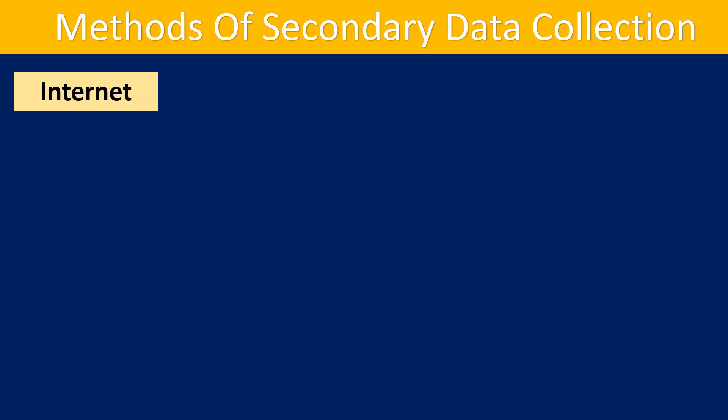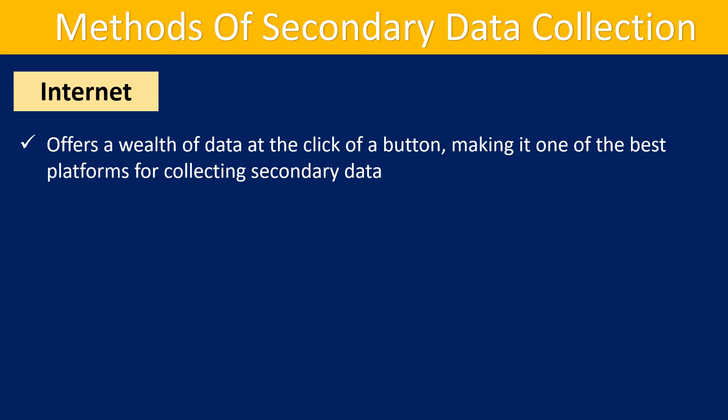The internet is one of the most popular and readily accessible sources of secondary data. It offers a wealth of data at the click of a button, making it one of the best platforms for collecting secondary data. While much of the information is free, some websites may charge fees, although these are typically low. However, it is important to be careful of inauthentic and unreliable sources of information.